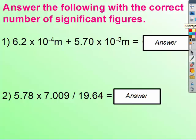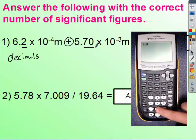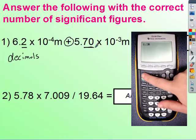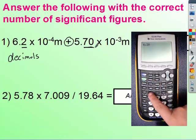So looking at our first example problem, we're adding, which means you should be looking at decimals. We have one decimal place and two decimal places. So the first thing you've got to do is plug this into the calculator. So for our first one, we're going to have 6.2. Whenever you're trying to do times 10, you're going to do second and then this comma, which is EE.